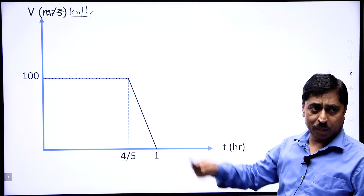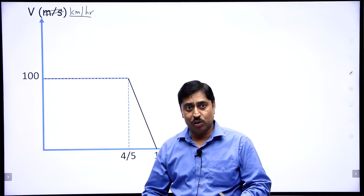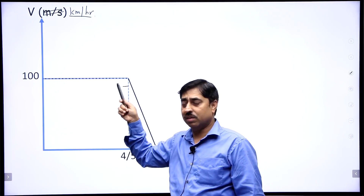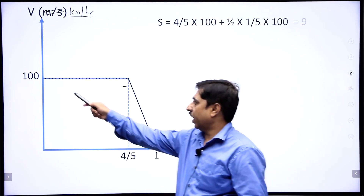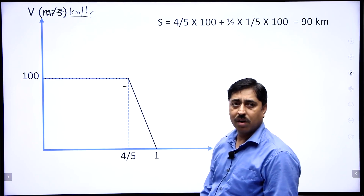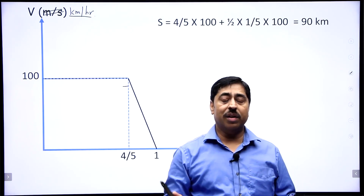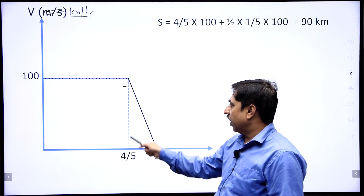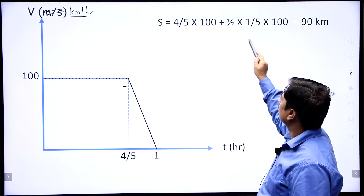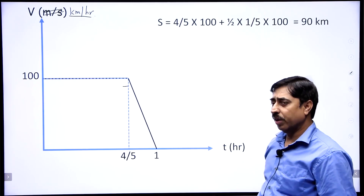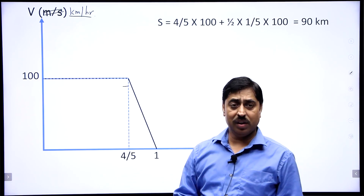What is the total distance between S1 and S2? Calculating the area of this graph gives us the distance between stations S1 and S2. This rectangle has area of 4/5 × 100 — since 4/5 is in hours and 100 is in km/h, the area gives displacement in kilometers. Then this triangle has area half × base × height = half × (1/5 hour) × (100 km/h). The total area of this rectangle plus this triangle turns out to be 90 kilometers, which means the distance between stations S1 and S2 is 90 kilometers.